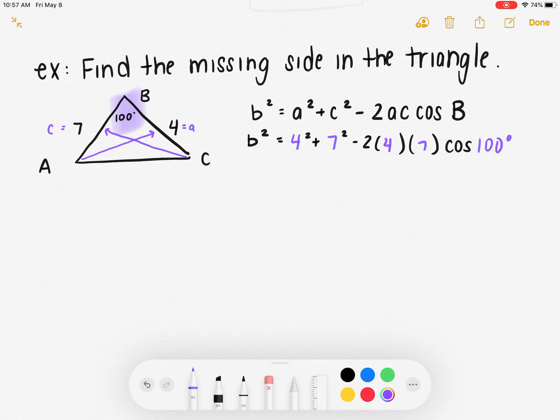Now the nice thing about this problem is I don't need to separate anything or move anything over because I'm trying to find B. And everything on the right side of this equals sign is all numbers, so I can just put this straight into my calculator, making sure that my calculator is in degrees.